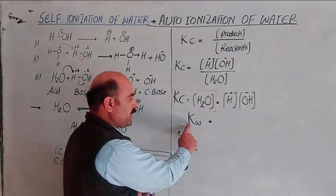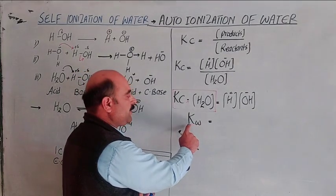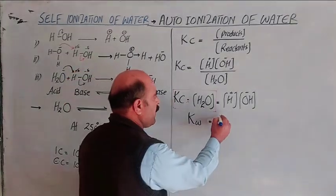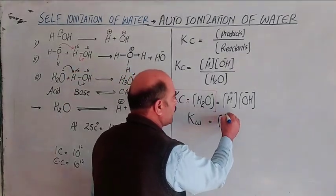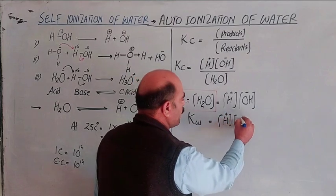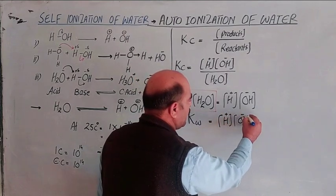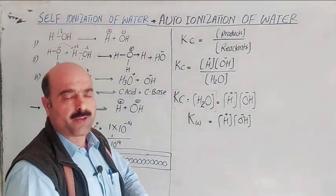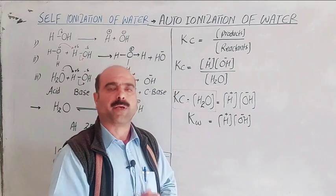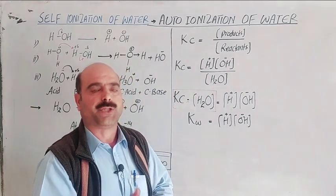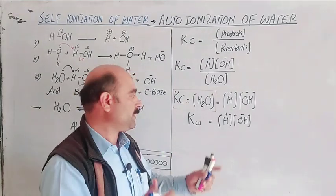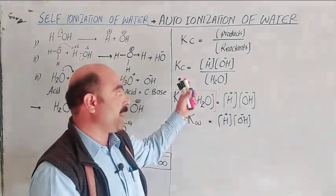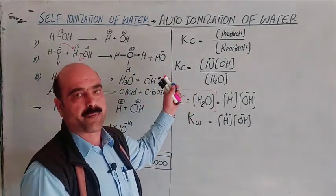The ionization constant of water, also called the dissociation constant of water, is Kw — W for water. So the concentration of hydrogen ions times the concentration of hydroxide ions equals Kw, which is constant at constant temperature. This is because the bond breaking process is endothermic.